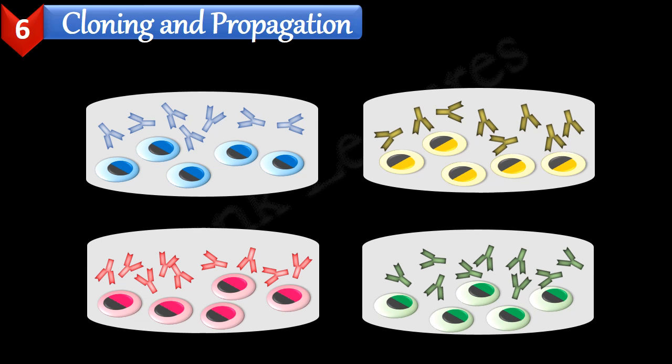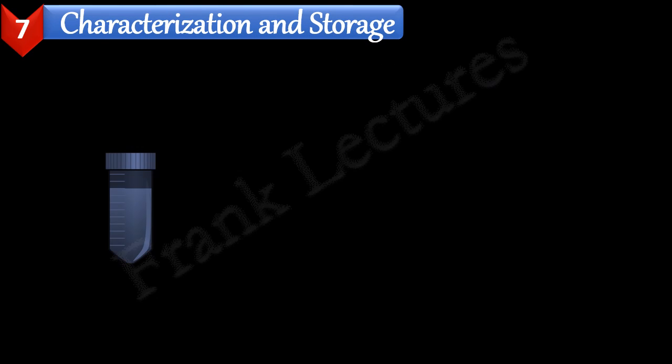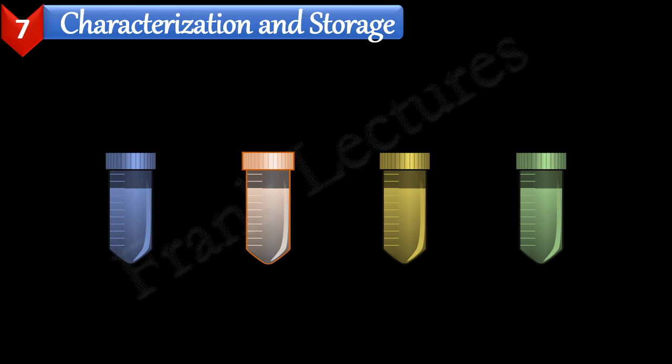So now we have separate clones of activated B cells, each producing antibodies of a single specificity. In each case, the antibodies produced are known as monoclonal antibodies. In the final step, these hybridomas and monoclonal antibodies are characterized and stored — mostly they are stored in liquid nitrogen. Now these monoclonal antibodies are ready to use in treating and diagnosing diseases.